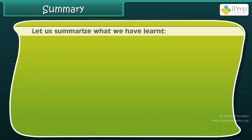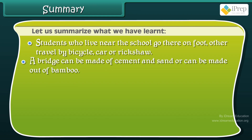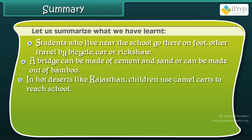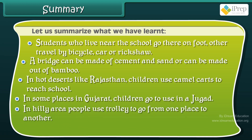Let us summarise what we have learnt. Students who live near the school go there on foot. Others travel by bicycle, car, or rickshaw. A bridge can be made of cement and sand or out of bamboo. In hot deserts like Rajasthan, children use camel carts to reach school. In some places in Gujarat, children go to school in a jagar. In hilly areas, people use a trolley to go from one place to another. A pulley is used to lift heavy loads.